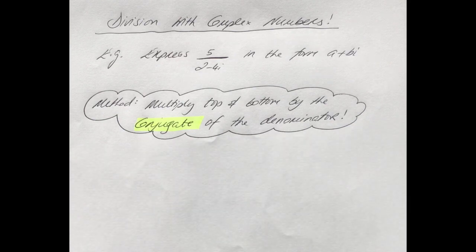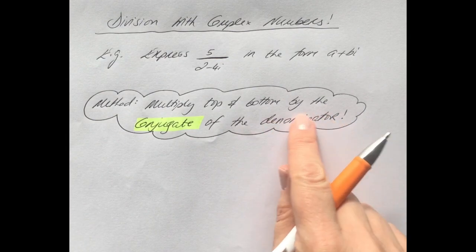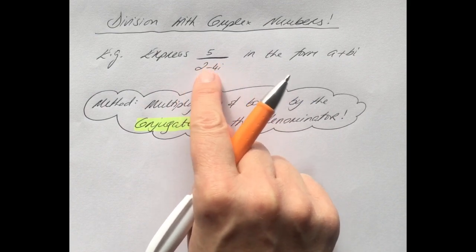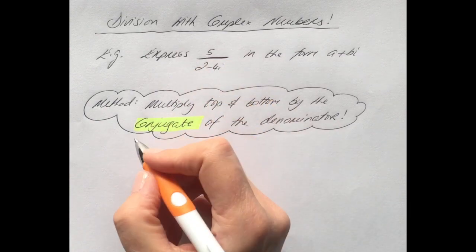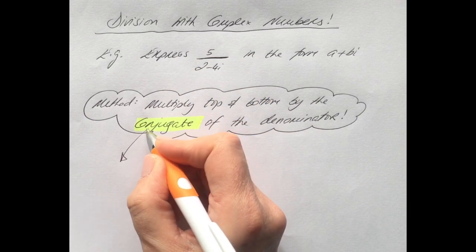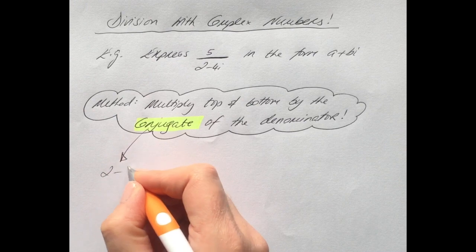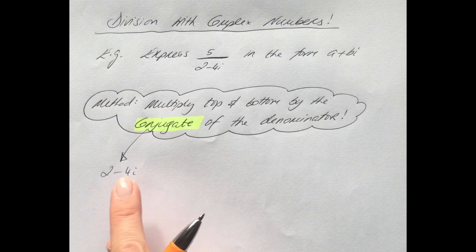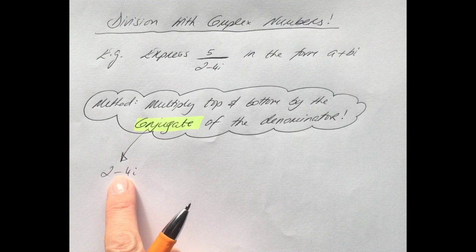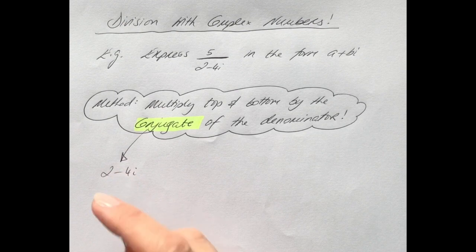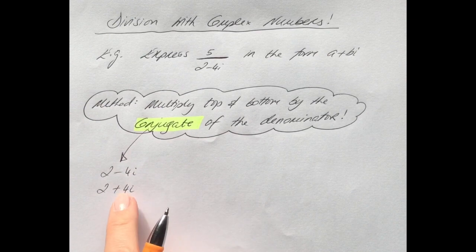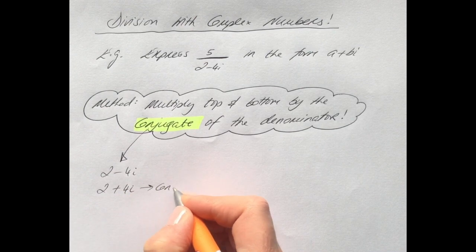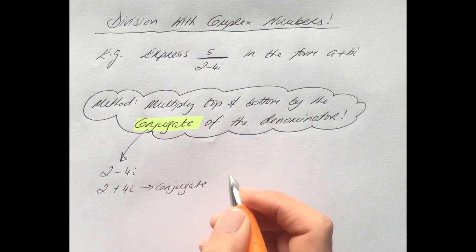Let me explain that in more detail. The denominator is always what's on the bottom, so we want the conjugate of 2 minus 4i. The conjugate is the complex number but with the sign of the imaginary part changed. So the conjugate of 2 minus 4i would be 2 plus 4i — you just change the sign of the imaginary part only.